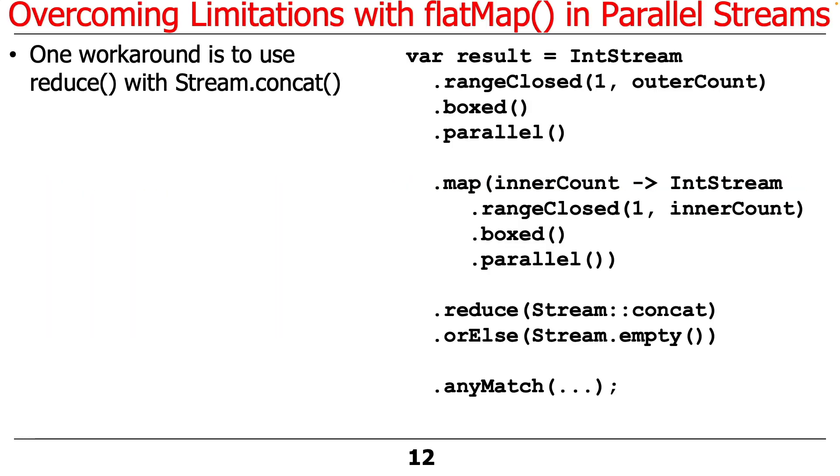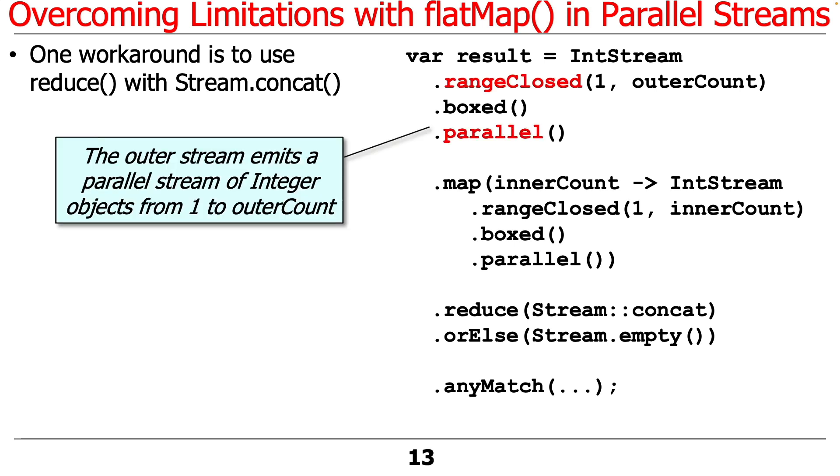So how do we overcome these limitations? There are at least two ways to do it that are reasonably clean. One way is to use reduce together with Stream.concat. And I probably should have said map followed by reduce with Stream.concat. And this is one way to do this. And we'll look at this in more detail in the context of the case study, but I want to give you the big picture view first.